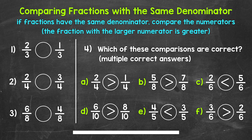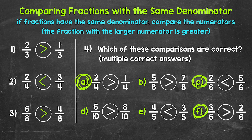Okay, so that's two minutes. Let's go over the answers. For number one, you should have two-thirds is greater than one-third. For number two, you should have two-fourths is less than three-fourths. For number three, six-eighths is greater than four-eighths. And for number four, you should have A: two-fourths is greater than one-fourth; C: two-sixths is less than five-sixths; and F: three-sixths is greater than two-sixths.